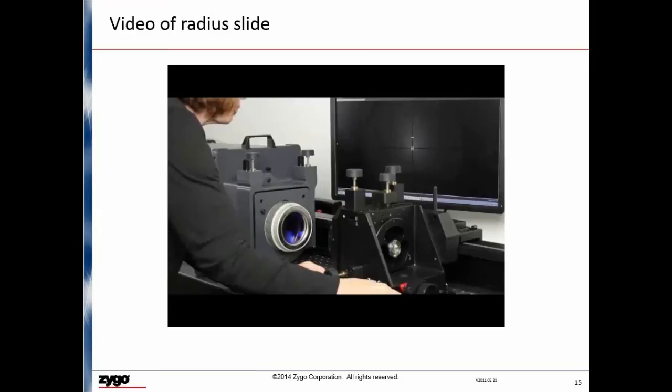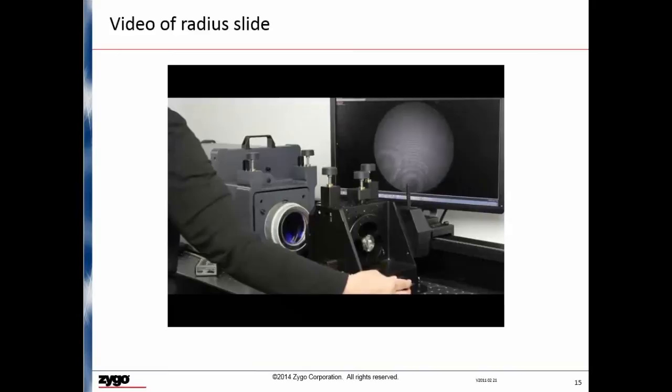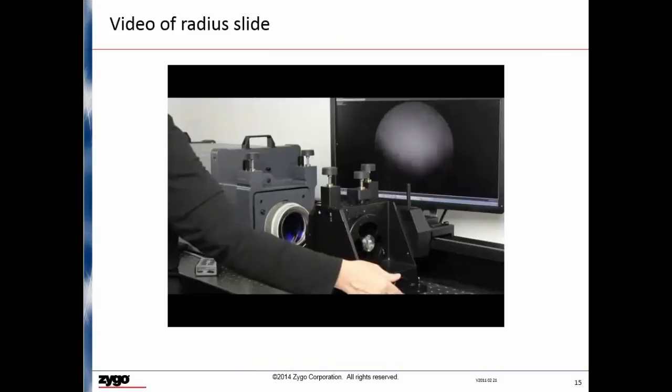Once the transmission sphere is installed in the interferometer, we use the alignment mode to center the return spot from the reference surface. Next, the part under test is moved to the cat's eye position, and the interferometer is switched to view mode. In the view mode, a fringe pattern is observed. The fringe pattern is nulled by adjusting the Z position of the test part and the tip tilt of the transmission sphere mount. This process critically aligns the optical axis of the transmission sphere to the optical axis of the interferometer.